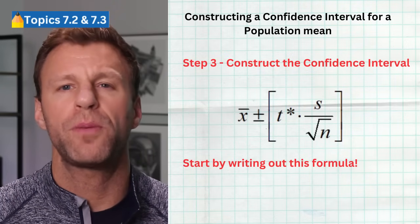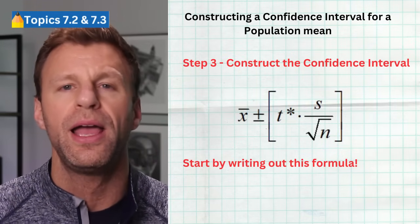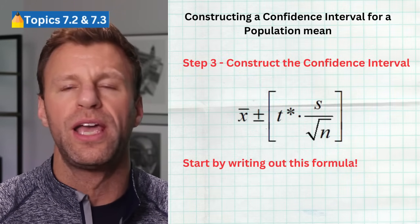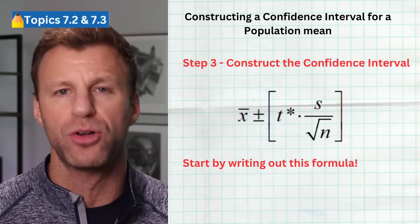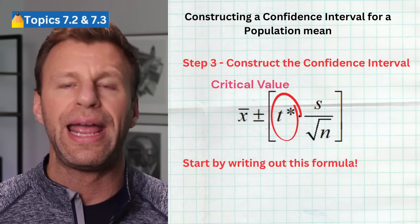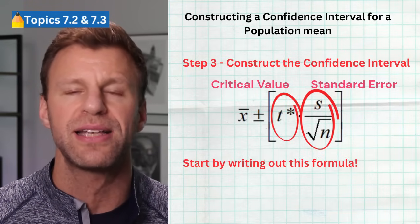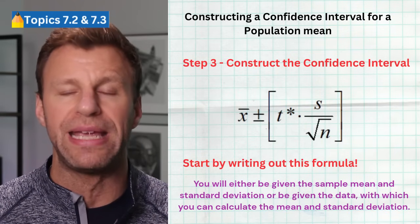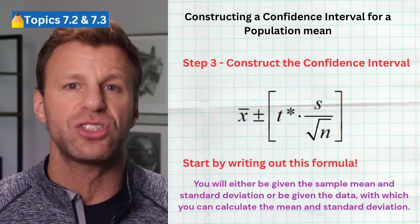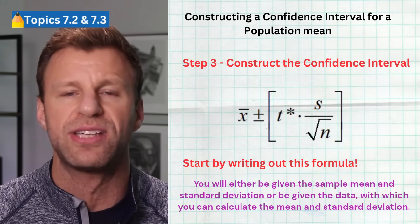Step three is to actually construct the interval using this formula: x-bar plus or minus T-star times s divided by the square root of n. X-bar is our sample mean and the center of our confidence interval. The margin of error is the product of the critical value T-star and the standard error, which is s divided by the square root of n. In a problem, you'll either be given the mean and standard deviation, or you'll calculate them from raw data entered into your calculator.